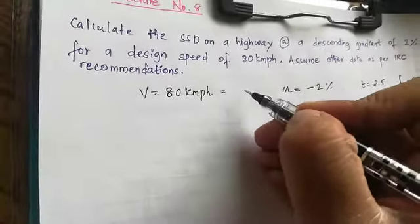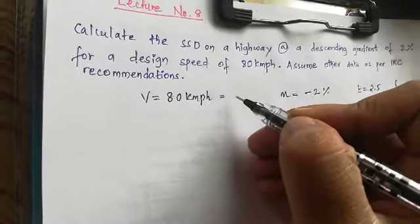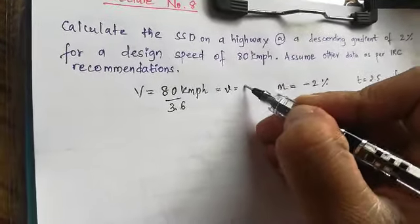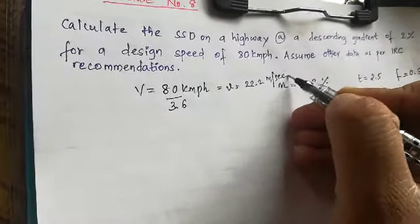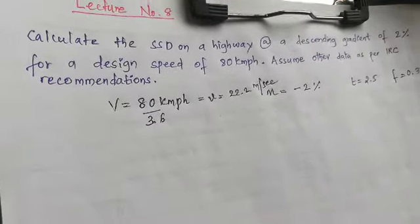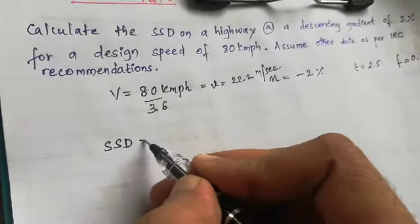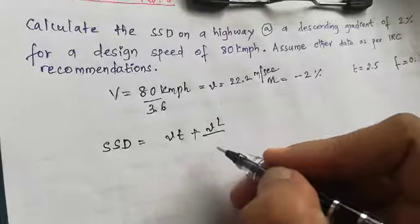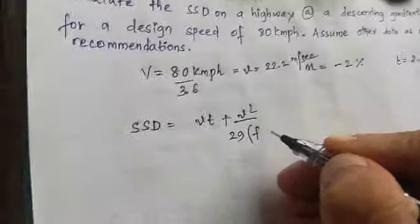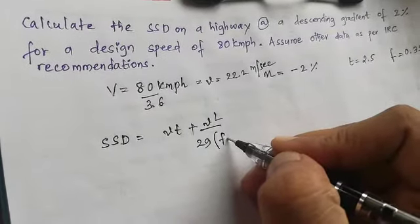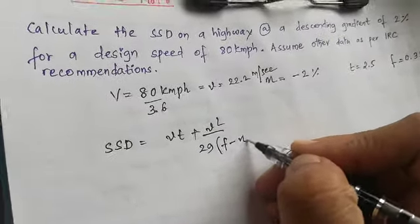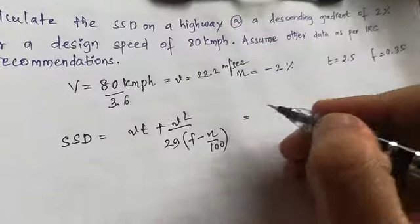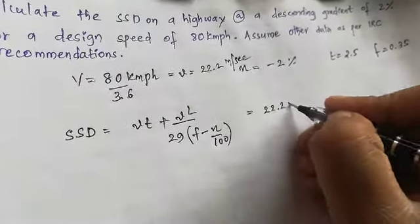Let us solve the problem. 80 kmph, if I convert it to meters per second, is 80 divided by 3.6, giving V as around 22.2 meters per second. Stopping sight distance is V×t plus V squared divided by 2g in the bracket F, and here it's a descending gradient so minus n divided by 100.